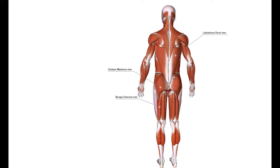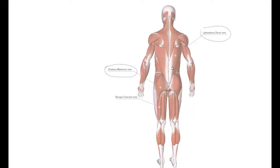Posterior oblique system, which is one of the major systems in our body, consists of gluteus maximus, opposing side latissimus dorsi, and thoracolumbar fascia in between. In my previous video, I was talking about how latissimus dorsi and gluteus maximus are biggest muscles in our body.